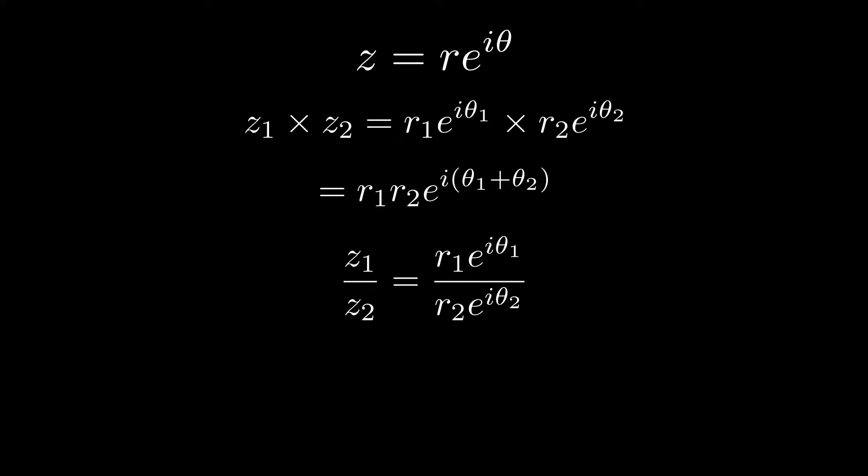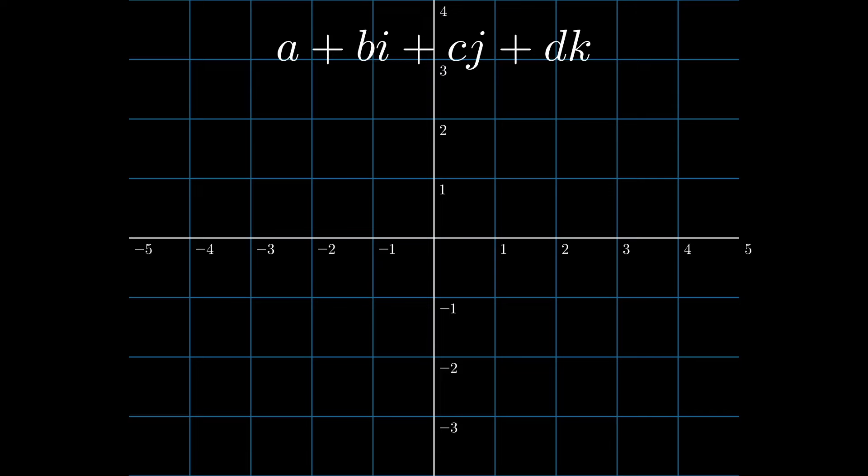The complex numbers extend our numerical framework beyond the limitations of real numbers, allowing us to solve problems and describe phenomena that otherwise would be impossible to tackle. But believe it or not, we've only scratched the surface of the numerical universe. When we look at complex numbers, we're talking about two dimensions. But what if we extend this concept into four dimensions with the quaternions?